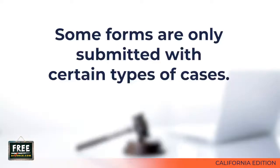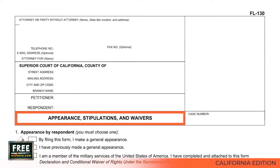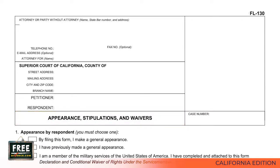Then there are some forms that are only submitted with certain types of cases. For example, there is a form called Appearance, Stipulations, and Waiver, which is FL-130. You only need this form if you have an uncontested case. If you have any kind of default case or a contested case, you don't need the FL-130. We will discuss the FL-130 later in this video.